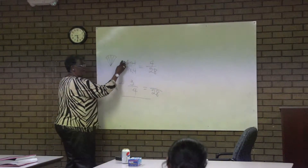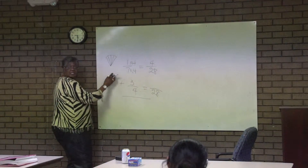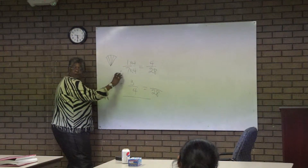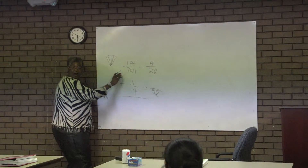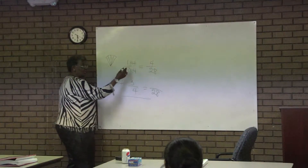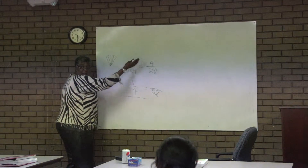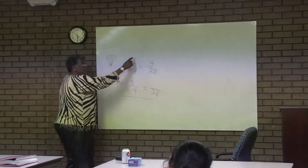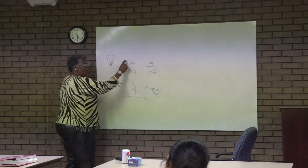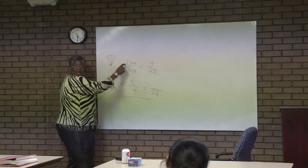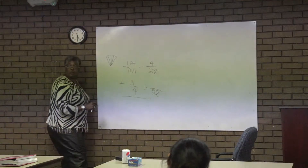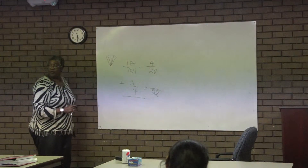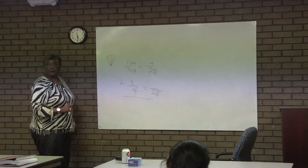Now if I had two of these sevens, I'd have four pieces twice — I'd have eight pieces. That's why you say times four. However many pieces you have here, each one is going to turn into four pieces now.